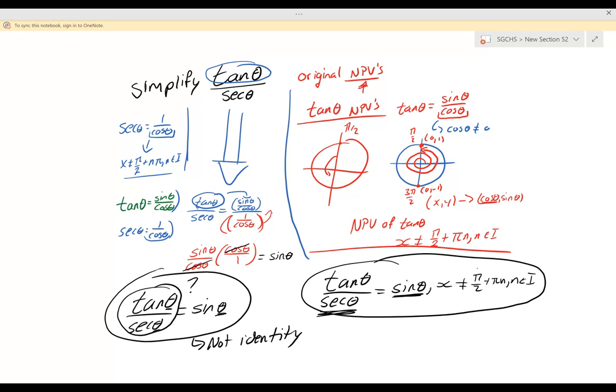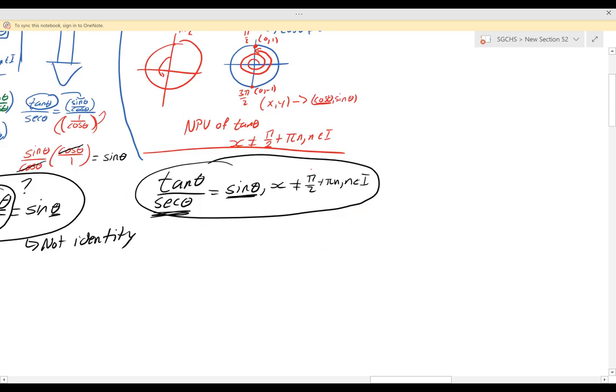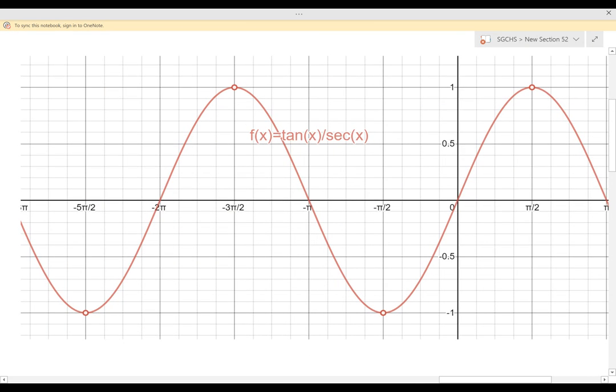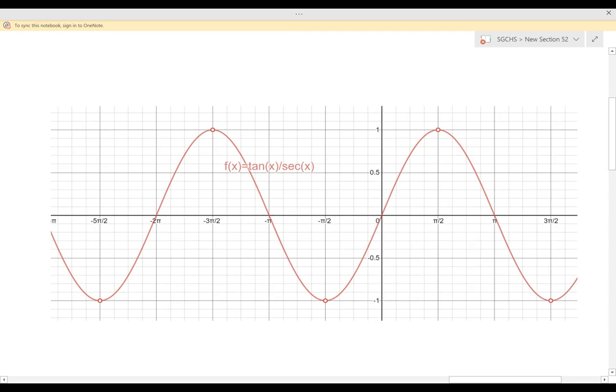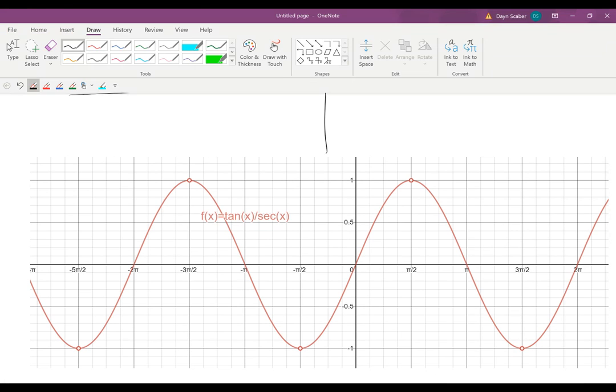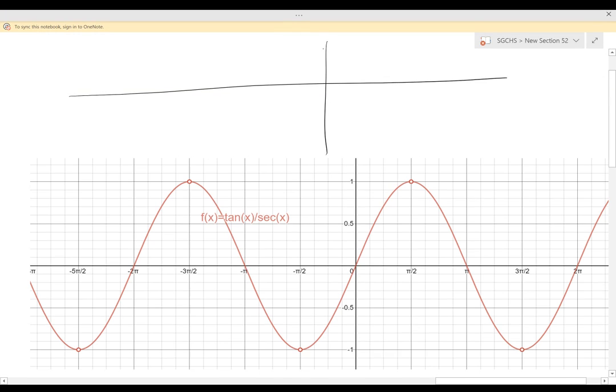Now let's think about what their graphs might look like. If we make our way over here we have graphed in red tan x over sec x. Now recognize this looks really close to what a sine function looks like. A sine function is essentially going to look almost the exact same. A sine function we have a max here of 1, negative 1.